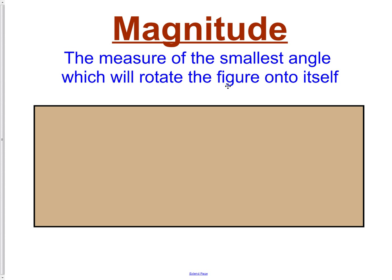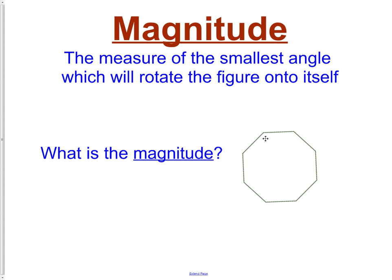Next is magnitude. Magnitude is the measure of the smallest angle which will rotate the figure onto itself. What is the magnitude of this octagon? First thing we need to remember is that 360 degrees is a revolution all the way around one time. So as I rotate this octagon, right there is my first stop. What I would do is take 360 and divide it by 8.